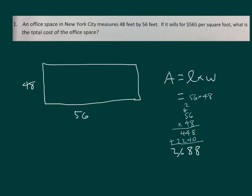Now what I need to do still is that it's $565 per square foot, so I need to take 2,688 and multiply it by 565. Make sure to do that to complete your problem.